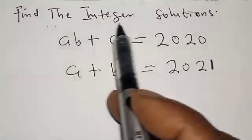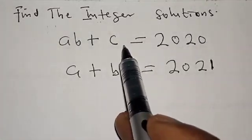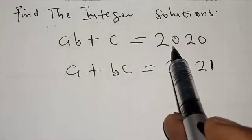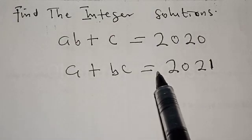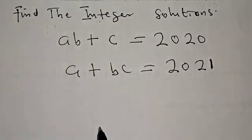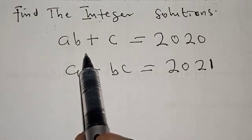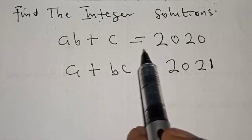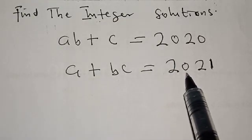Find the integer solutions. AB plus C is equal to 2020, and A plus BC is equal to 2021. Hi everyone, welcome to my class. In this class, we want to find the integer solutions from these given equations: AB plus C equals 2020, and A plus BC equals 2021.